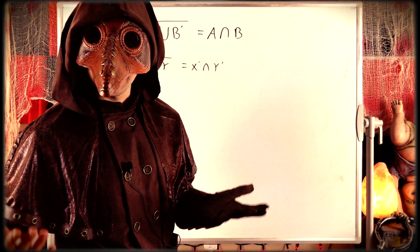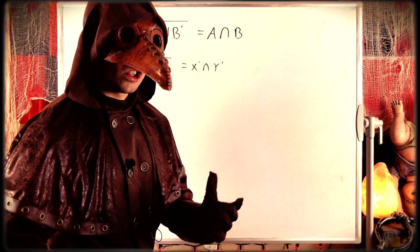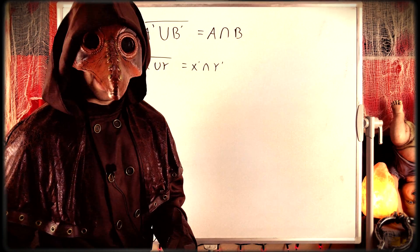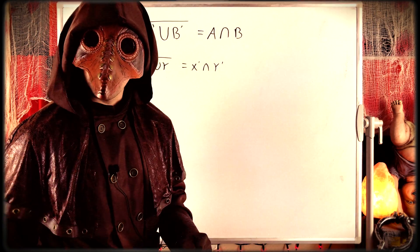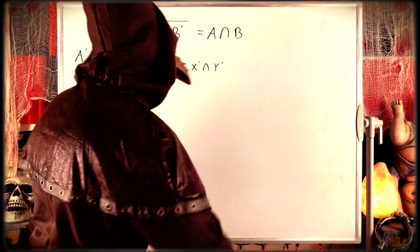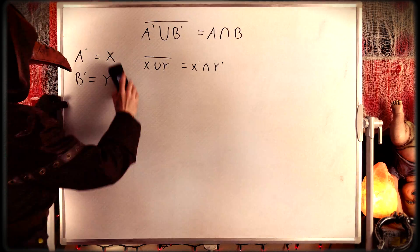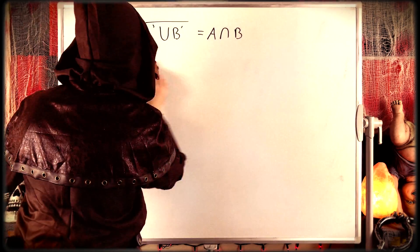Oftentimes, that might be a set like the real numbers, in which case the complement of a set containing one and two, for example, would be all real numbers except one and two. So when we take these complements, it's assumed there's some underlying universal set.